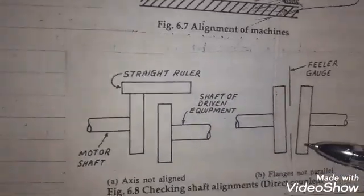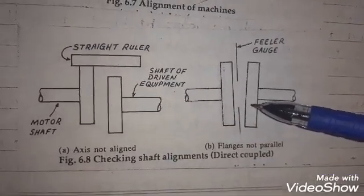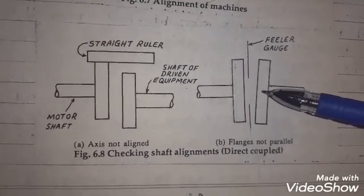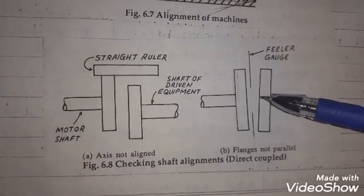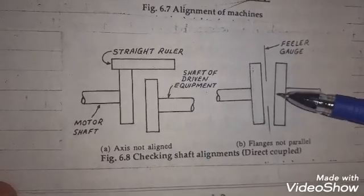Another thing for this direct coupled drive is to check whether the flanges are parallel or not. It may happen that externally we see that the flanges are properly parallel to each other, but internally there may not be. So how to check it?